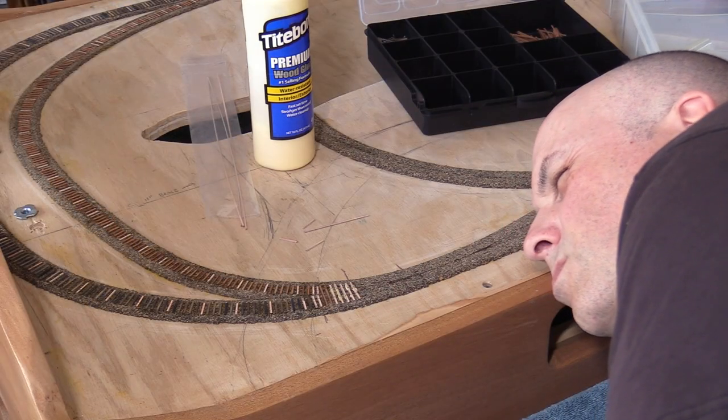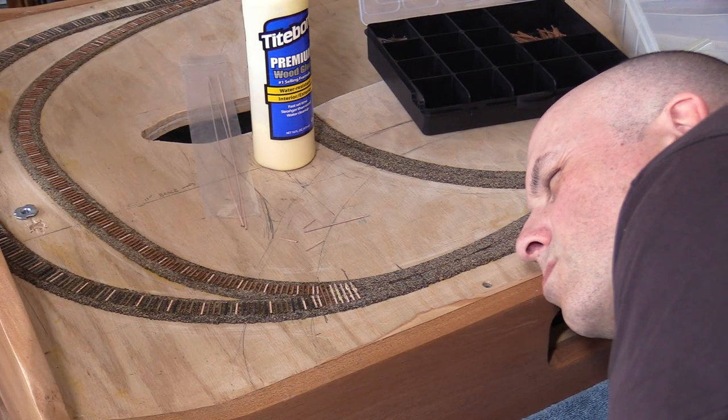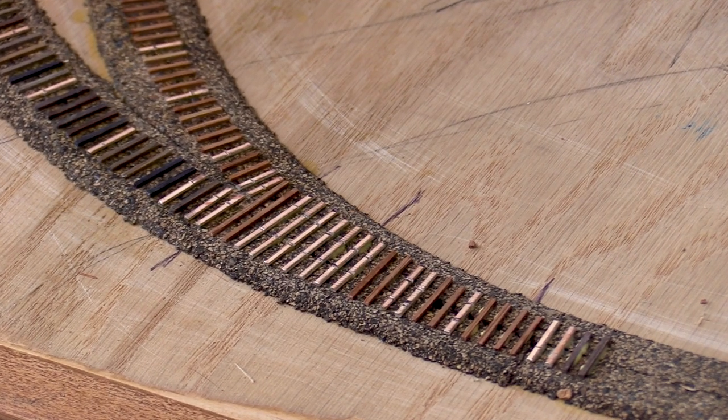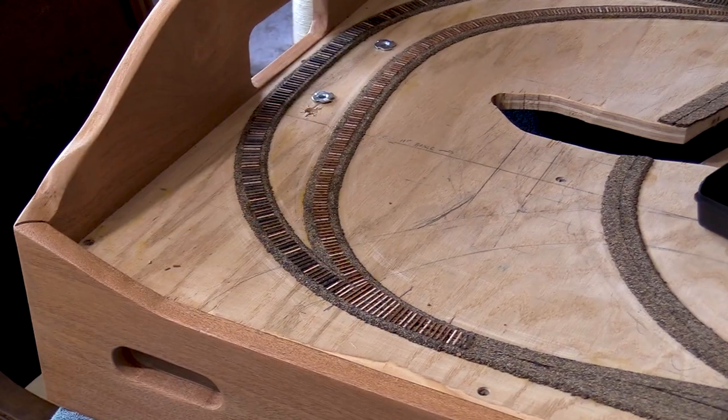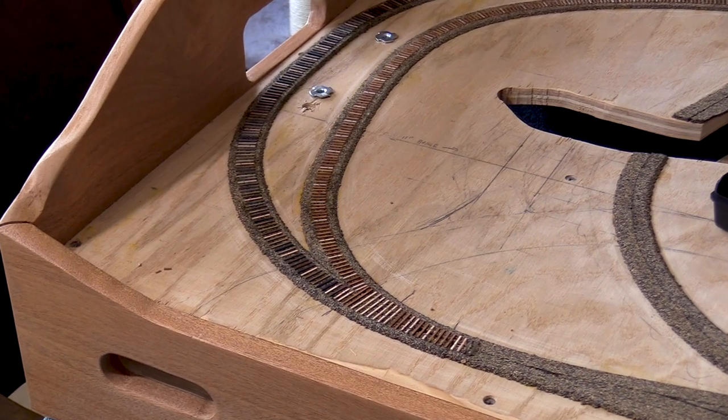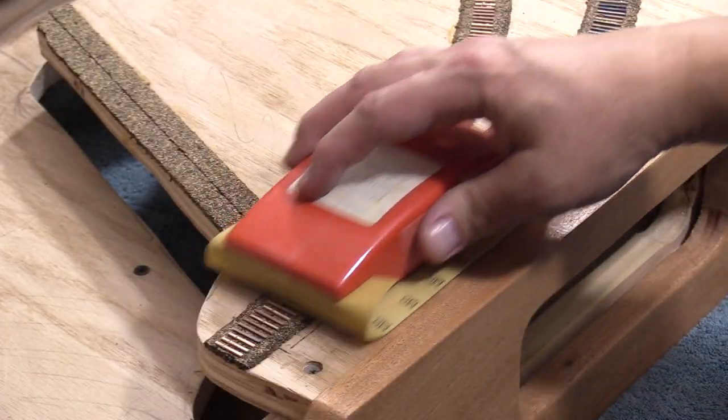Sighting down the roadbed is a good way to see if any ties get out of alignment. Now I have all the ties put down for the second gauge separation. All the ties for the tracks through the tunnels are also in place.